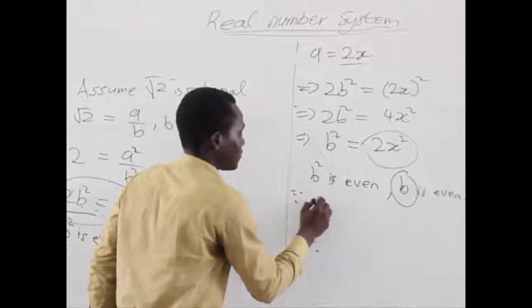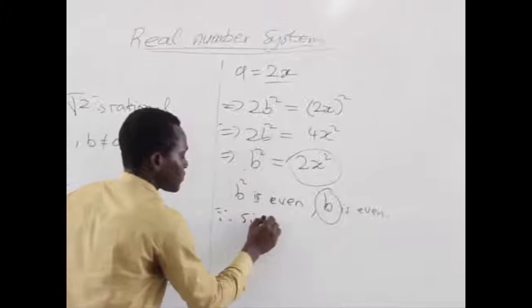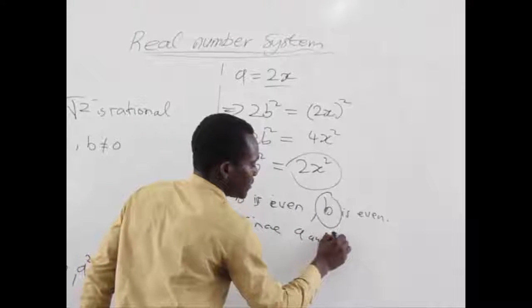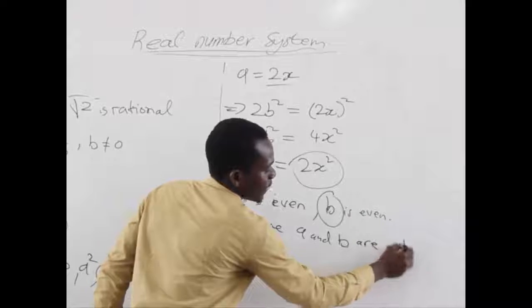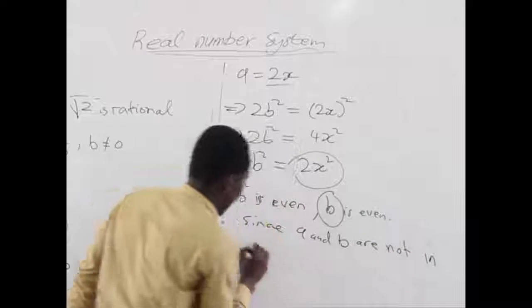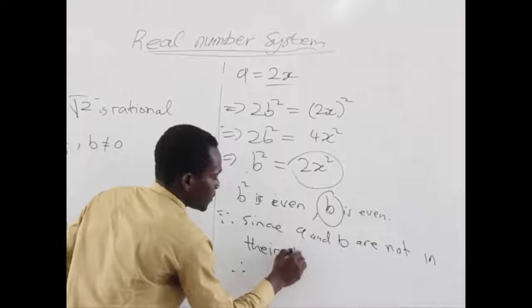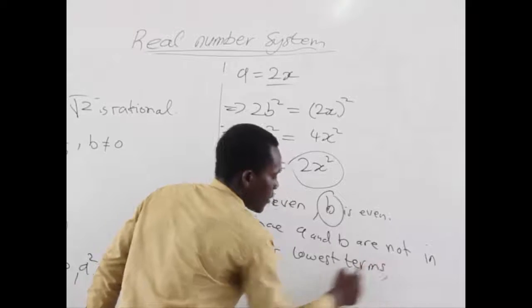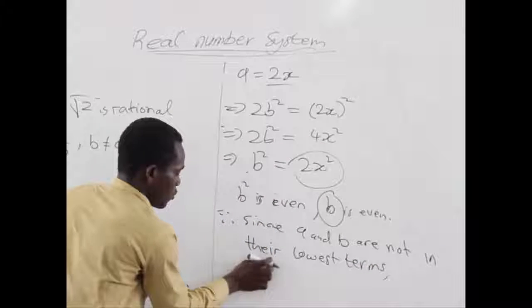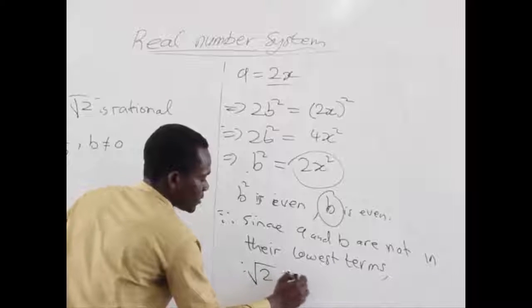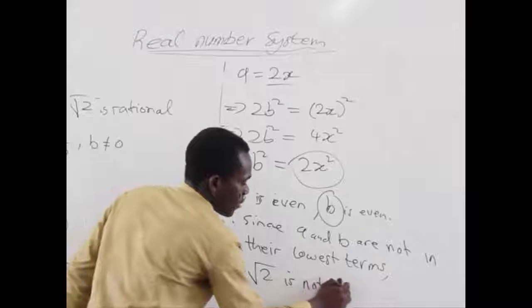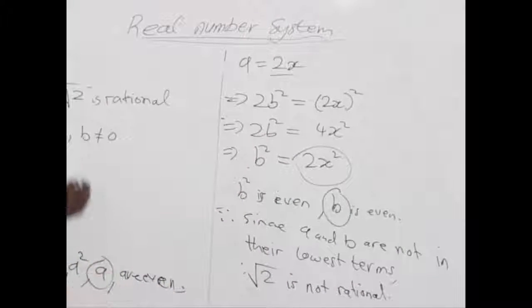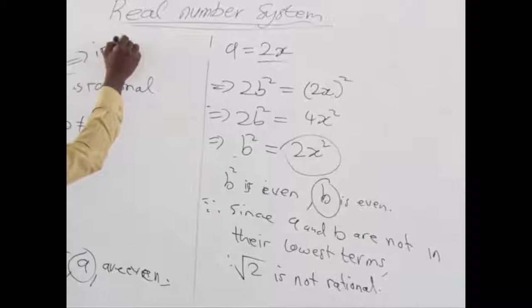So we can conclude that since a and b are not in their lowest terms, root 2 is not rational. So if it's not rational, then it is irrational.